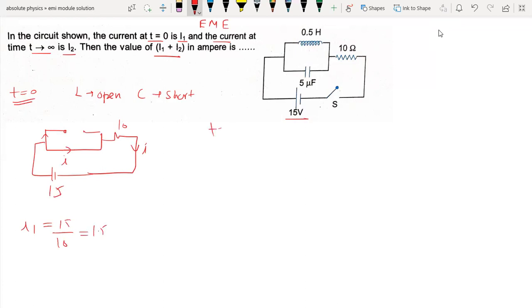Now at t equals infinity, L is short circuit and C is open circuit. So here the inductor will be short and the capacitor will be open circuit.